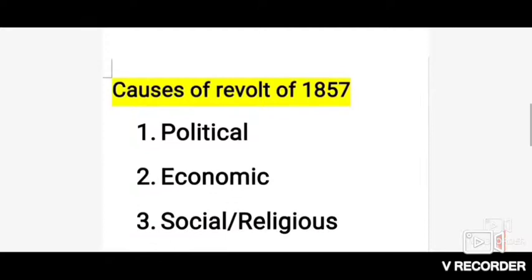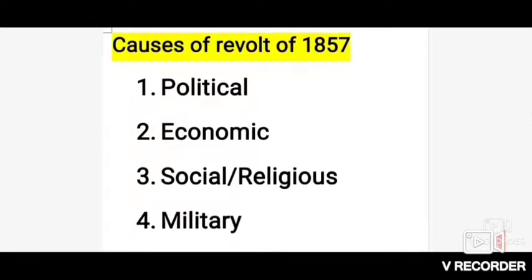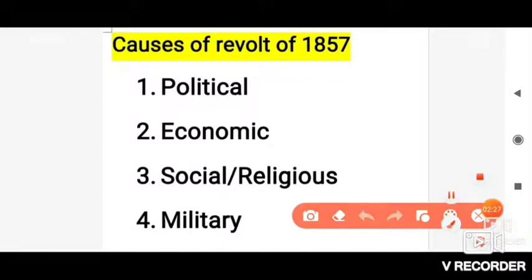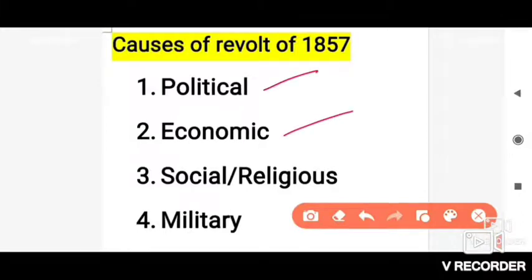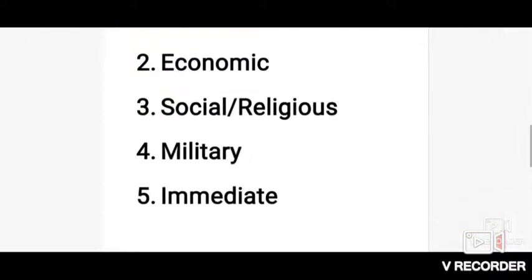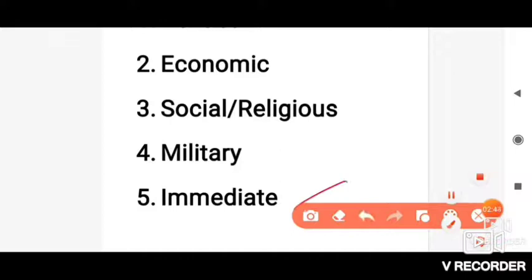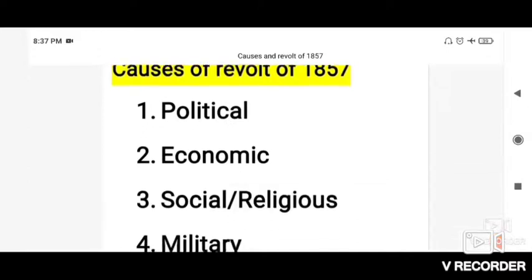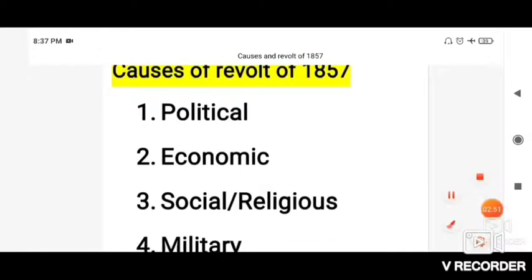Apart from that, the causes due to which people started revolting — what were those causes? It's not like one came before another, but all these causes were emerging simultaneously at different places. So political cause was there, economic cause was there, social and religious cause was there, military cause was there, and immediate cause was also there. First, we will discuss the political cause.